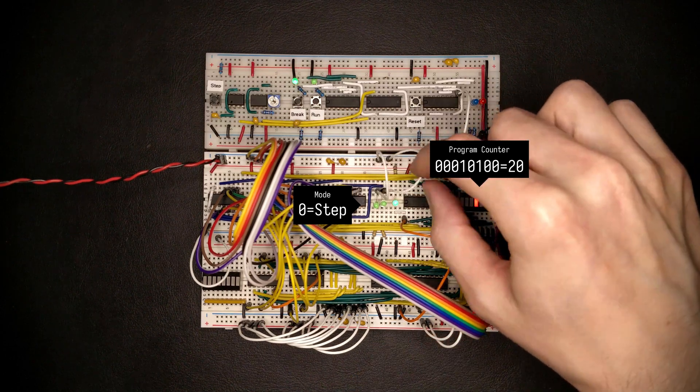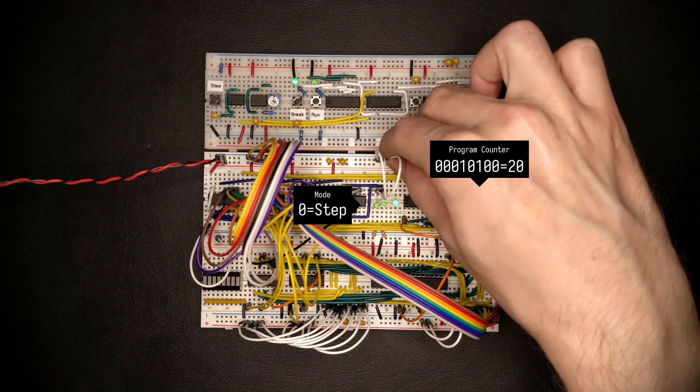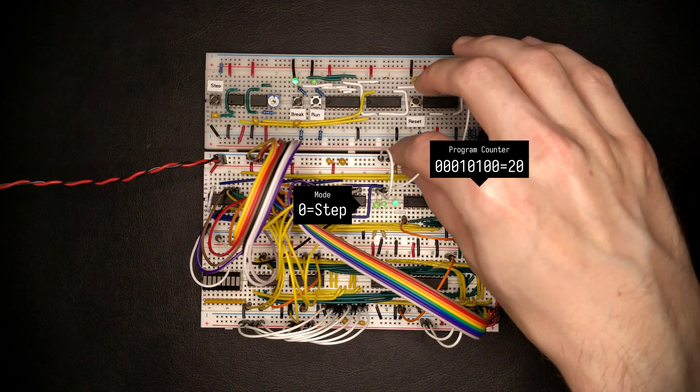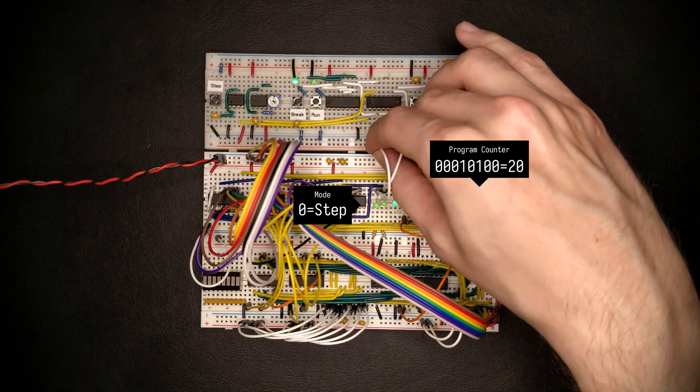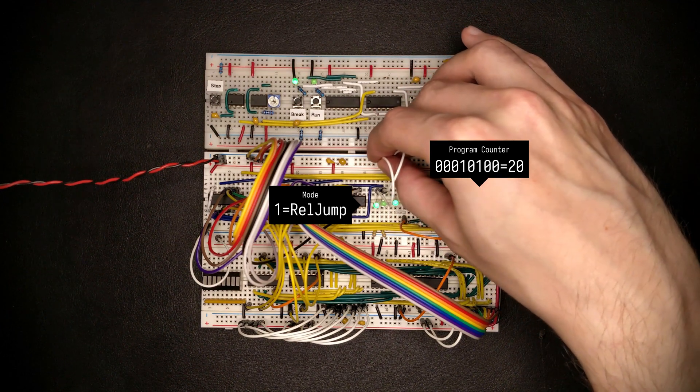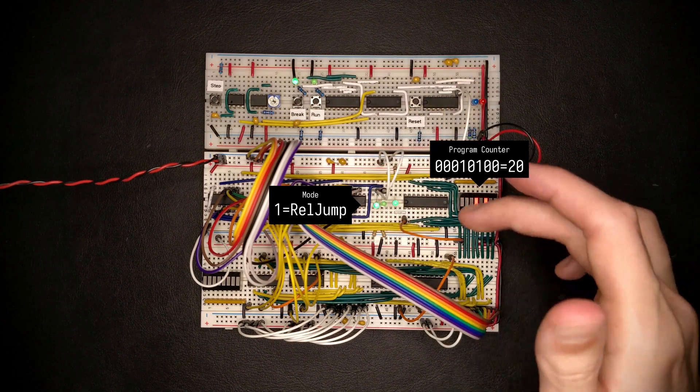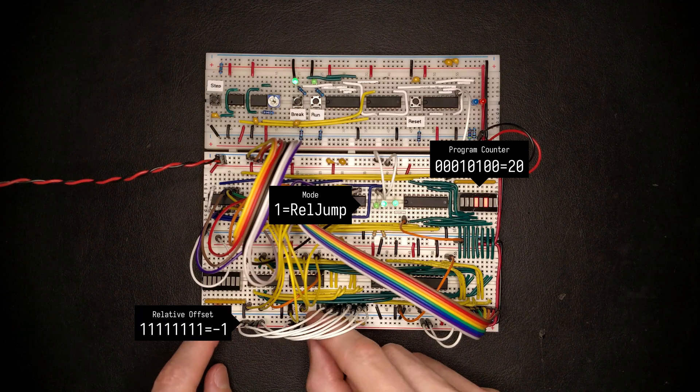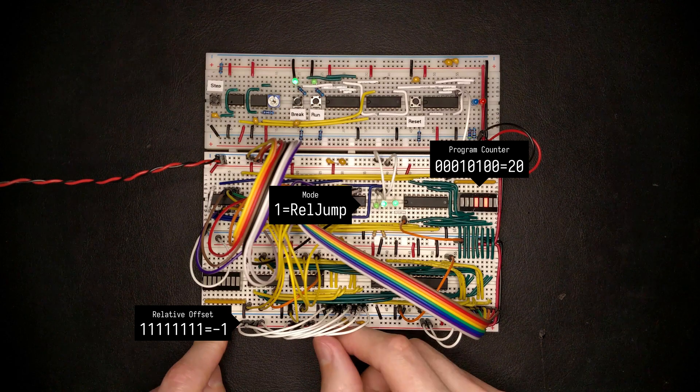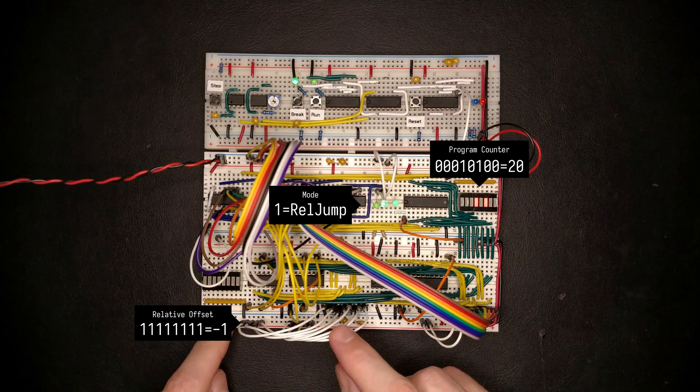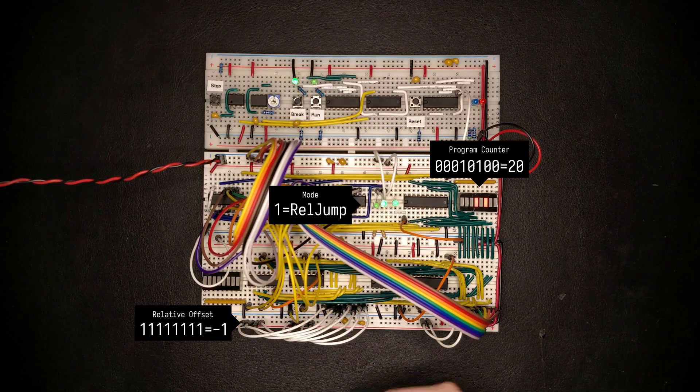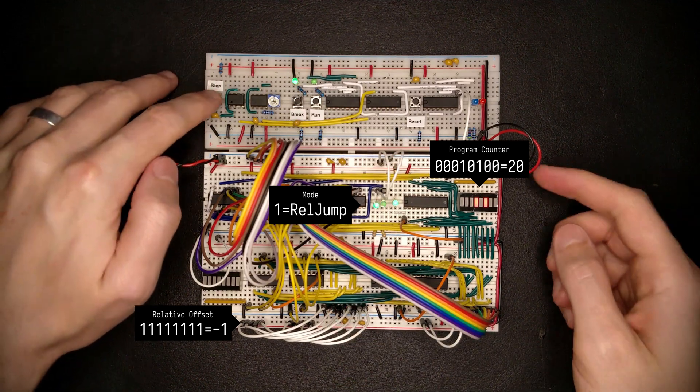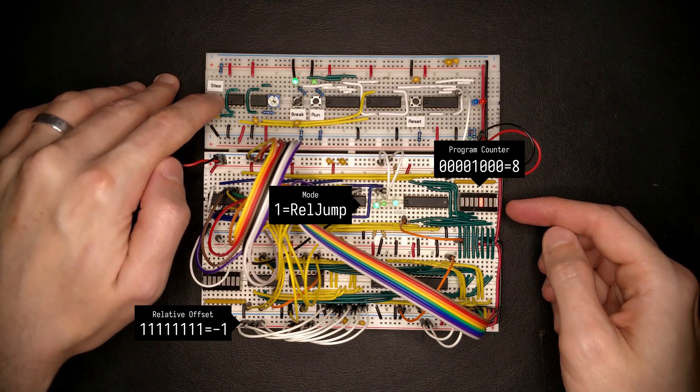Now if we change this over to a one we should be selecting the relative jump mode. Now I have to keep in mind that these are actually backwards so this here is the least significant bit, so that's a one, that's input one of the multiplexer selected. So currently programmed here, let me program this to all ones which is two's complement for one step backwards, so the relative jump at the moment is just going to jump one byte backwards. And sure enough we are stepping backwards.